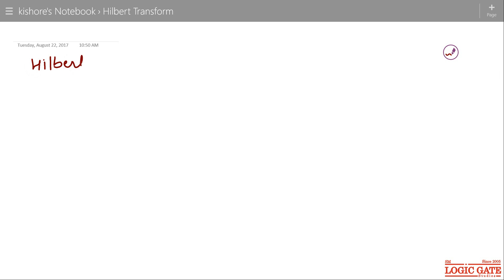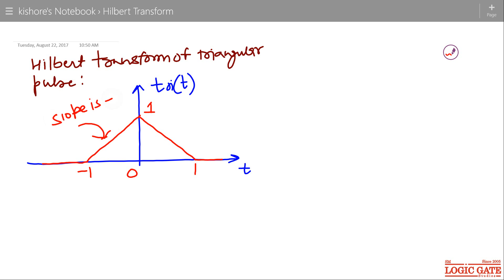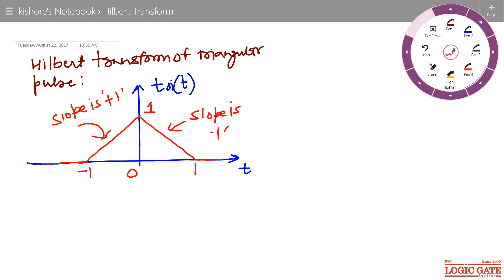Hilbert Transform of Triangular Pulse. If I draw the triangular pulse, denoted by tri(t), it is a straight line with slope plus 1 from minus 1 to 0, and a straight line from 0 to 1 with slope minus 1. The intercept is plus 1 on the vertical axis. For the first line, slope is plus 1; for the second line, slope is minus 1.